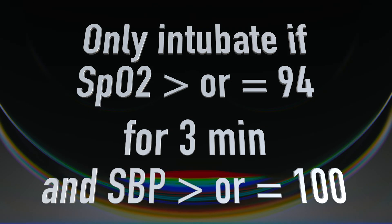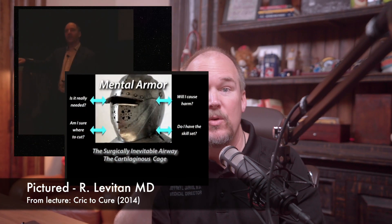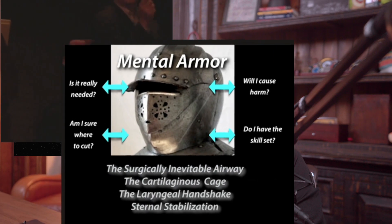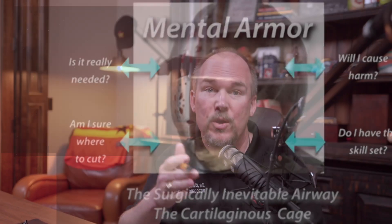Failure to place a supraglottic is not an indication for a surgical airway by itself. If and only if you are truly in a can't-oxygenate, can't-ventilate situation are you able to proceed to surgical airway. If you can mask ventilate them, mask ventilate them — don't cut them.